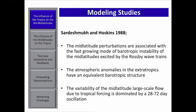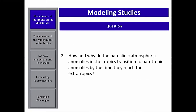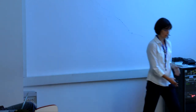Another important result was that atmospheric anomalies in the extratropics have a barotropic structure, and the variability of the mid-latitude large-scale flow is dominated by an oscillation with a period between 28 and 72 days. One question still not completely understood is how and why baroclinic atmospheric anomalies in the tropics transition to barotropic anomalies by the time they reach the extratropics — since disturbances in the tropics have a baroclinic structure while disturbances in the mid-latitudes have a barotropic structure.